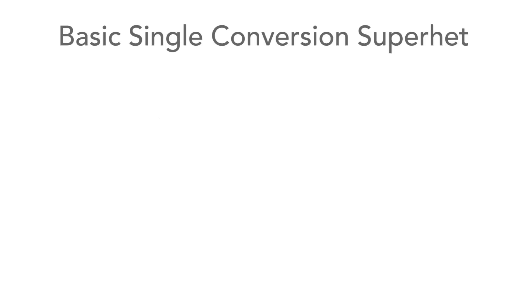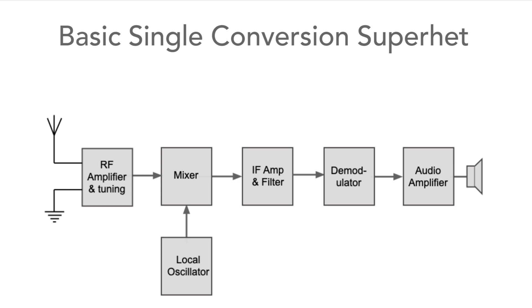Firstly, let's take a look at the basic single conversion superhet. Signals enter the RF stage where they're broadly tuned to remove the image signal. The signals then enter the first mixer along with the local oscillator where they're converted to a fixed frequency intermediate amplifier stage. Here they're amplified and filtered before being passed to a demodulator to reconstitute the baseband signal, which is often audio, and then this is amplified.